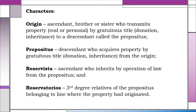Number 2 is the propositus. He is the descendant who acquires property by gratuitous title from the origin. Number 3 is the reservista — he is the ascendant who inherits by operation of law from the propositus. And number 4 is the reservatorius — these are the third degree relatives of the propositus belonging to the line where the property had originated.